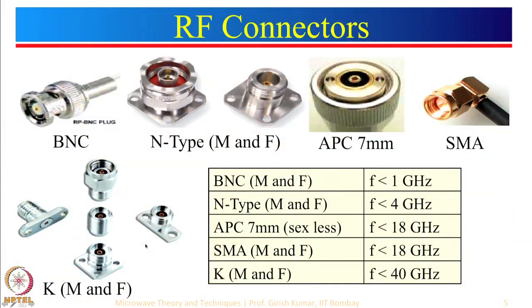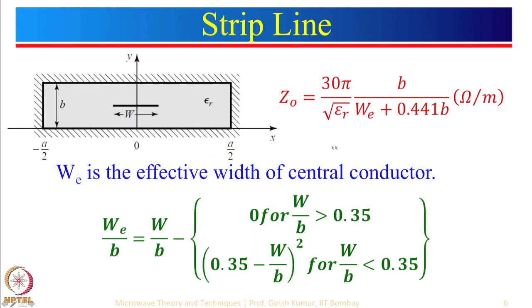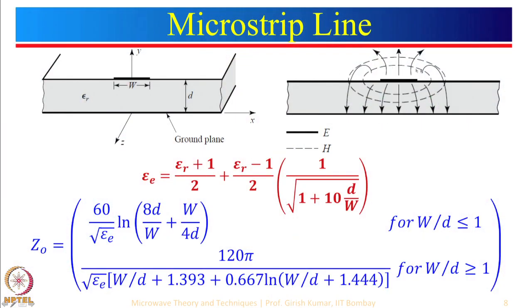At millimeter wave you have no option but to use those connectors. Then we talked about strip line — I mentioned how a coaxial line can be represented in terms of strip line, because in coaxial it is circular while in strip line it is rectangular. From strip line we looked into different types of substrates, from low cost to very high cost. After that we talked about microstrip line and the fringing fields associated with it.